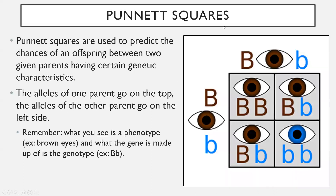Punnett Squares are used to predict the chances of an offspring between two given parents having certain genetic characteristics. The alleles of one parent go on the top, and the alleles of the other parent go on the left side.